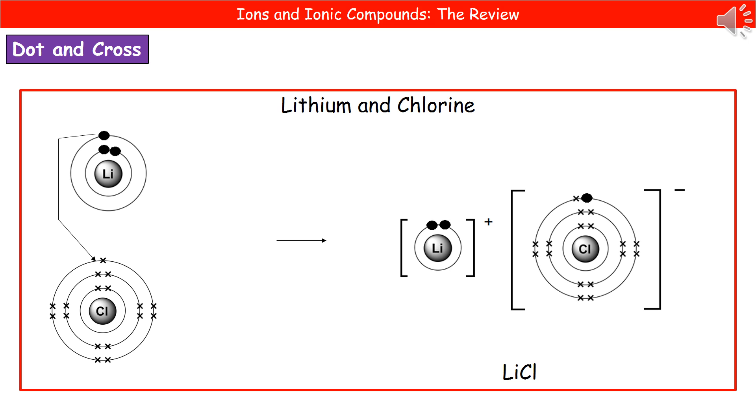Once you've done that, you can work out the formula for your actual ionic compound. Because we've got one plus and one minus, then one lithium ion will join to one chloride ion. So our formula would just be LiCl.